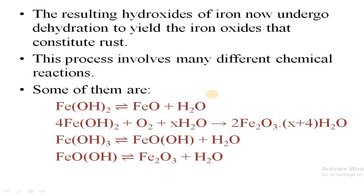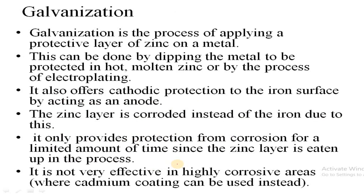There are many reactions involved. Some of the reactions shown here include: Fe(OH)₂ giving FeO and water, along with other reactions producing oxides of iron. These oxides of iron are the rust. Now let's go to galvanization.